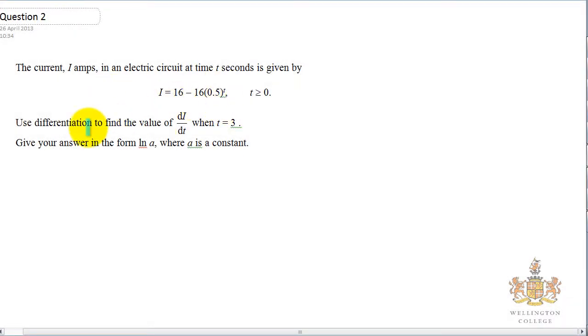The tricky bit of differentiating this is this bit here, and I'm going to focus on this bit for starters, the 0.5 to the t. Essentially you need to know the formula of what happens when you differentiate a to the x with respect to x, and you need to know that that is just equal to the natural log of a times a to the x.